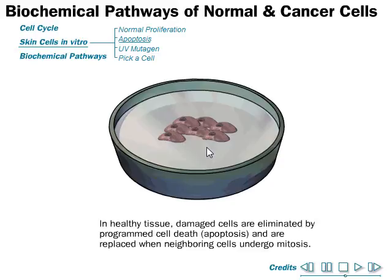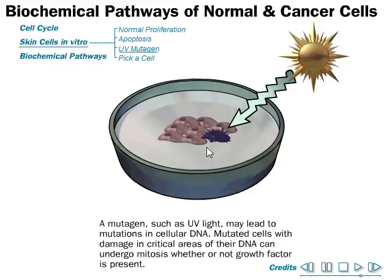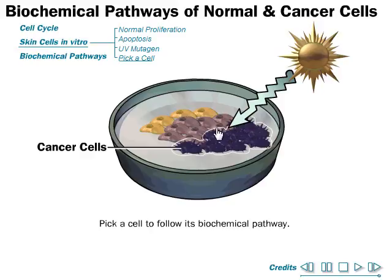However, when a mutagen — for example, UV light — leads to mutations in the cellular DNA, the mutated cell with damage in critical areas of the DNA can undergo mitosis whether or not a growth factor is present, making those cells dangerous for uncontrolled division.